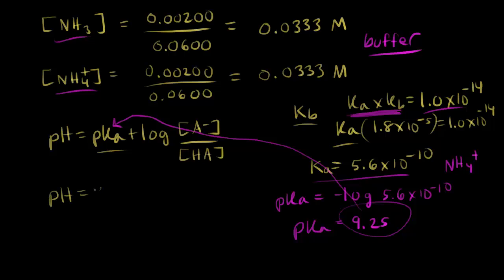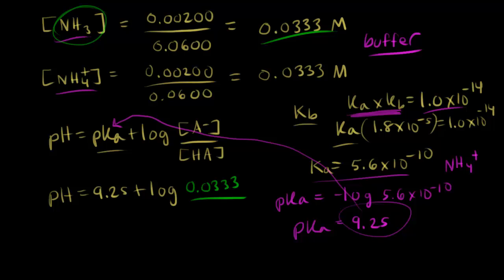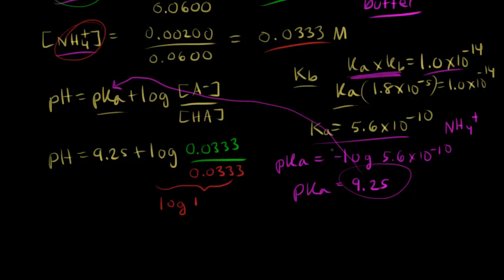Plugging into Henderson-Hasselbalch: pH equals 9.25 plus the log of (concentration of A⁻ over HA). A⁻ is the conjugate base, ammonia, at 0.0333, and HA is NH4+ at 0.0333. This is the log of one, which equals zero. Therefore, pH equals pKa, which equals 9.25.